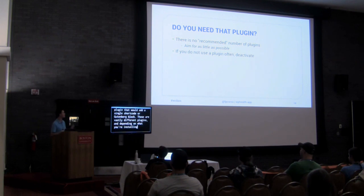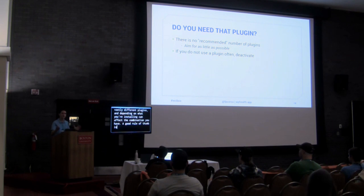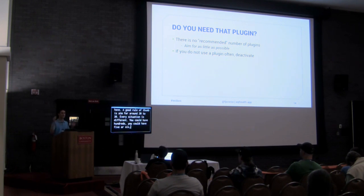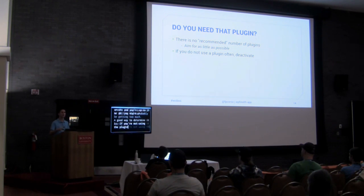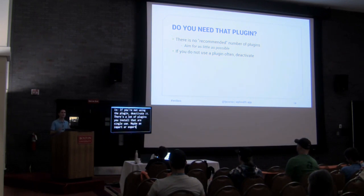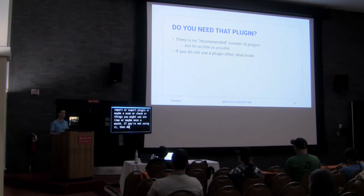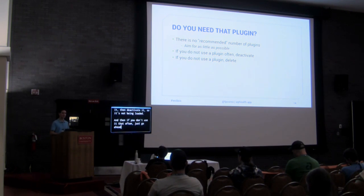A good rule of thumb is to aim for around 20 to 30 plugins. If you're up to 30 or 40, you might be getting too many. A good way to determine it is: if you're not using a plugin, deactivate it. There are a lot of plugins you install that are single use — maybe an import or export plugin, or a scan or check you might use once a month. If you're not using it, deactivate it so it's not being loaded, and if you don't use it often, just delete it from your site.